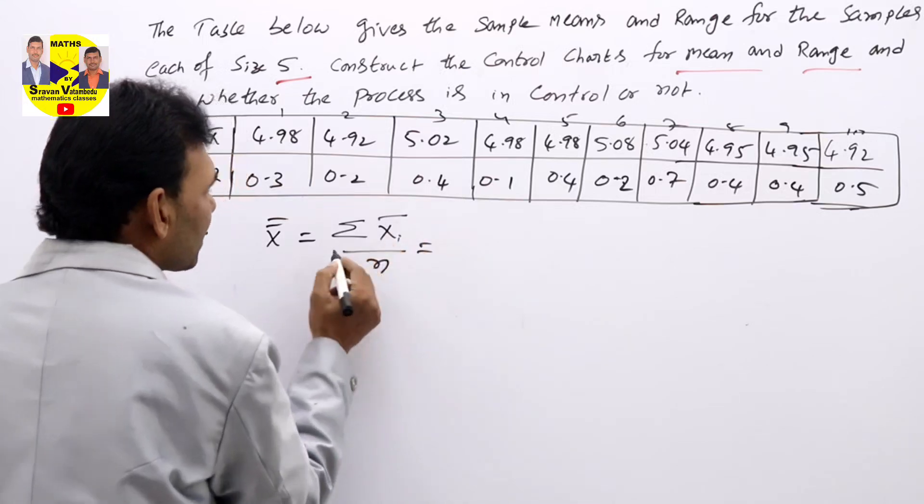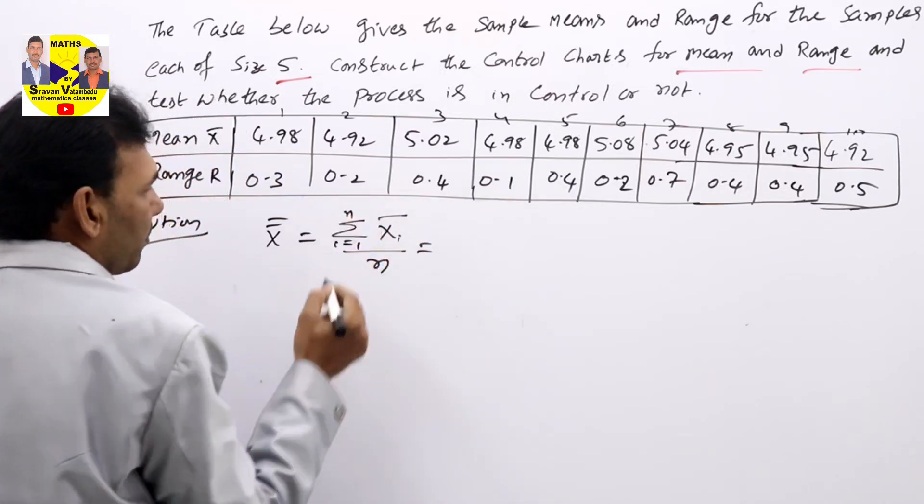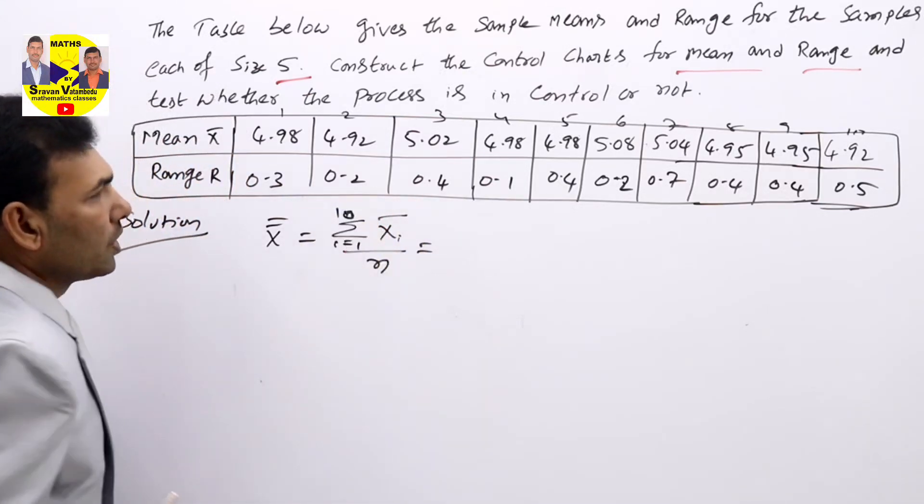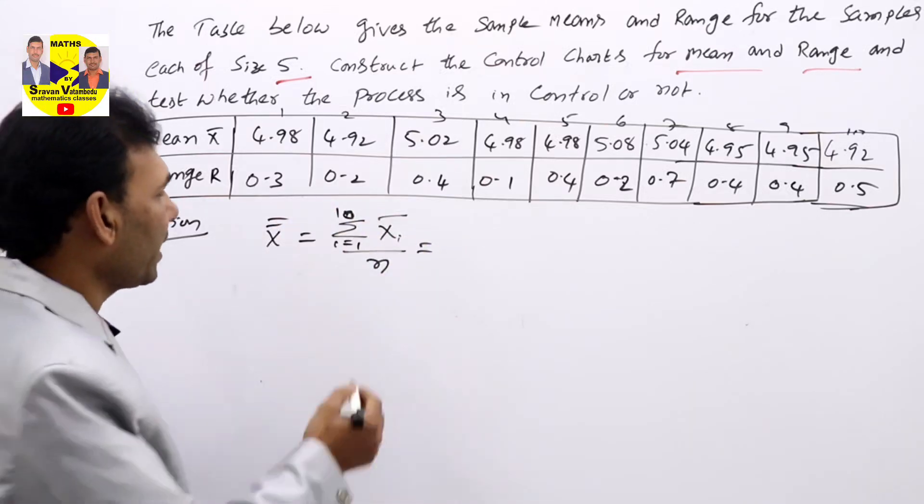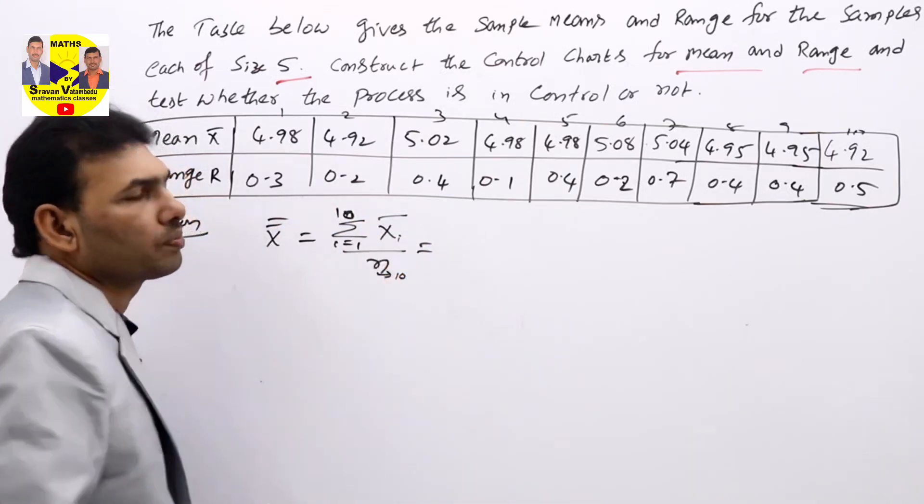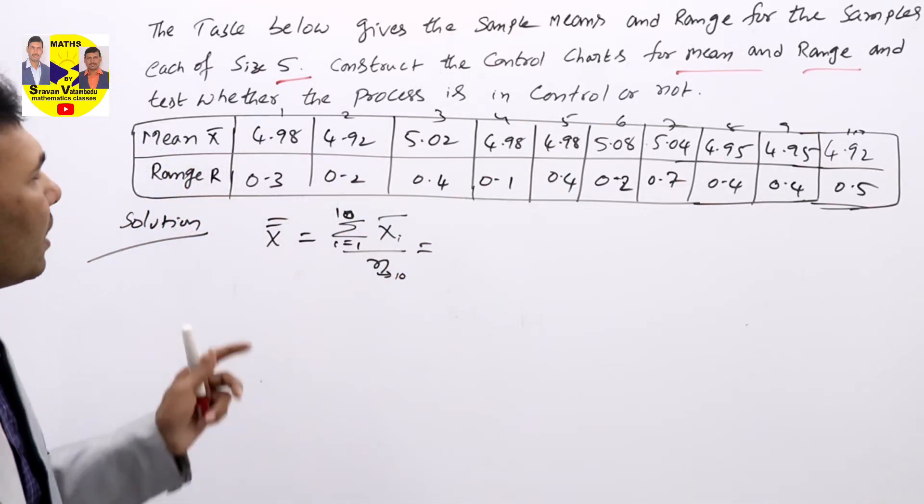Here i runs from 1 to n, that is 1 to 10. So the 10 values you need to add, n is 10. If you divide with 10, you will get the answer.